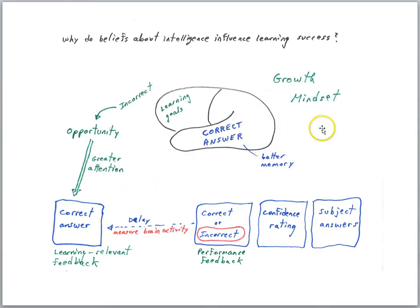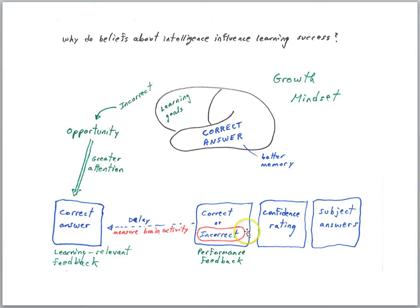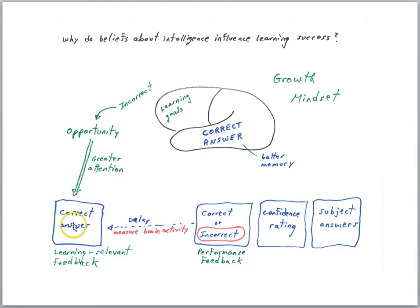What they found is that individuals with a growth mindset — as measured by surveys taken at another time — were better able to learn corrected answers. So when they got something wrong, they were actually able to learn the corrected answer and remember it when tested later. They were given a surprise test at a later time, and individuals with a growth mindset had better memory for the correct answers on the items they were initially incorrect on. Scientists suggest that when they look at the patterns of brain activity, individuals with a growth mindset are interested in learning — that's their goal. When they get negative performance feedback, because they're interested in learning, they see the wrong answer as an opportunity and the attention systems switch on to a higher degree, allowing better processing of the corrected answer.